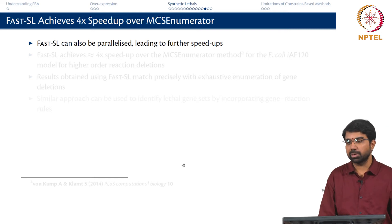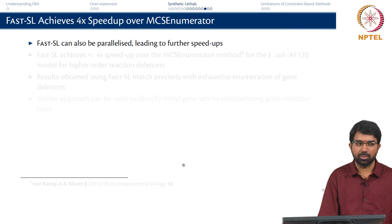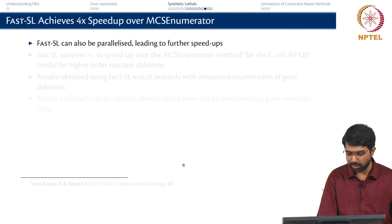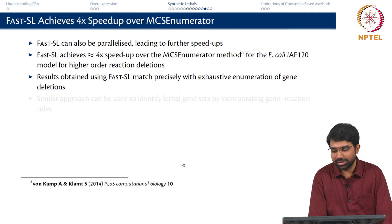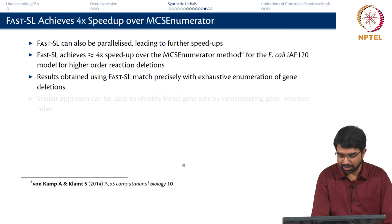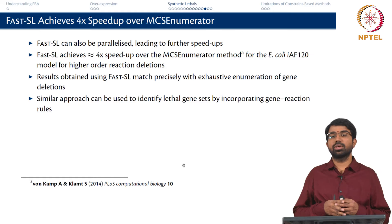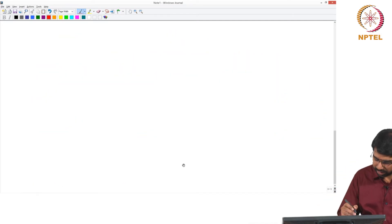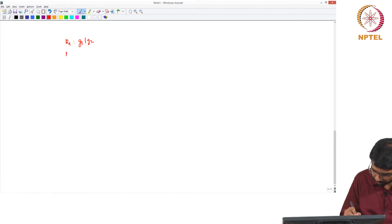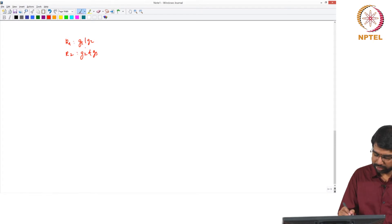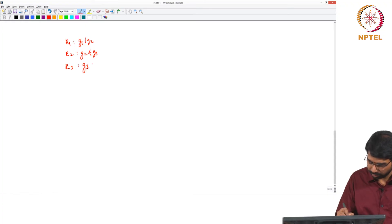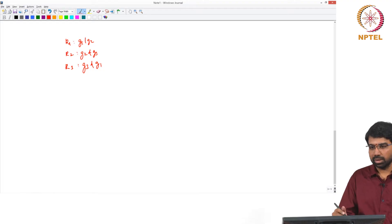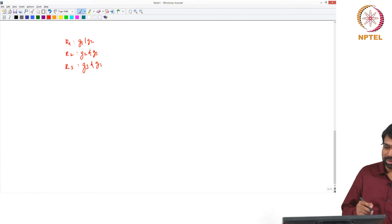FastSL finally achieved a 4x speed-up over MCS enumerator and a much higher speed-up over the earlier SL finder. MCS enumerator is the more recent algorithm. We tested this with exhaustive enumeration and the results agreed exactly — we have proof for the algorithm as well. A very similar approach can be used to find synthetic lethal gene sets, although with gene sets it is a little trickier. For example, R1 is catalyzed by G1 or G2, and R2 by G2 and G3 — when you remove G1 nothing is affected, but removing G3 affects R2.